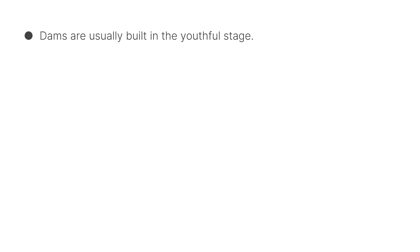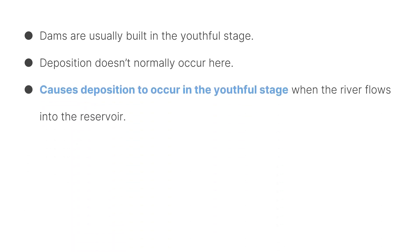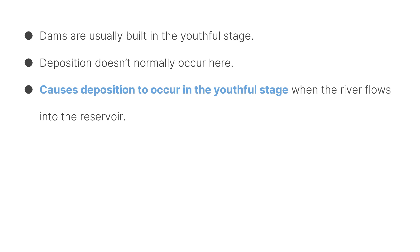Dams are usually built in the youthful stage, or upper stage. Deposition doesn't normally occur there, but dams cause deposition to occur in the youthful stage. It happens when the river flows into the reservoir — and a reservoir is essentially a lake — so when a river flows into it, it loses its energy, and that's why you get so much deposition behind the dam.